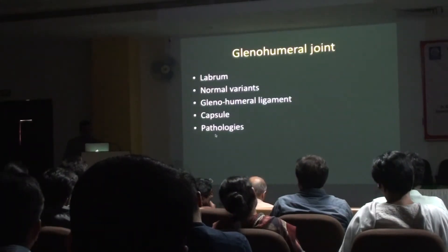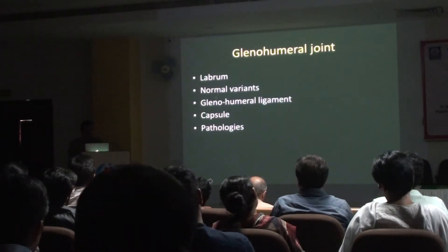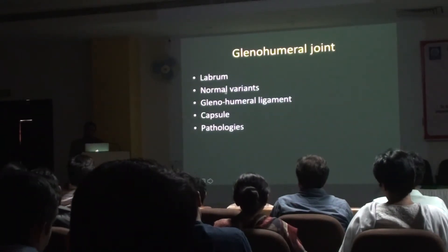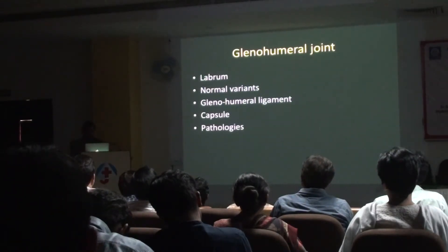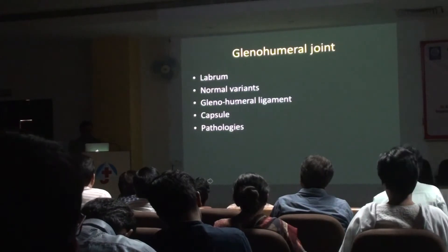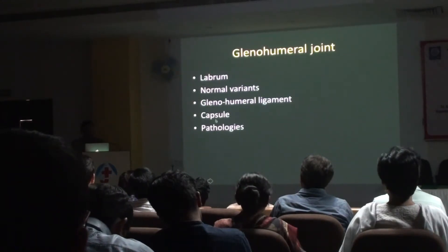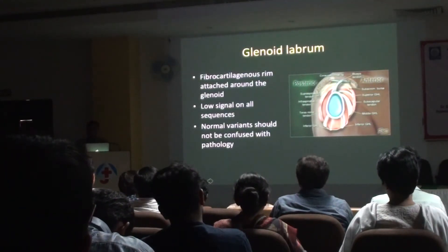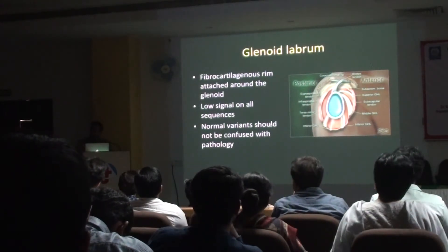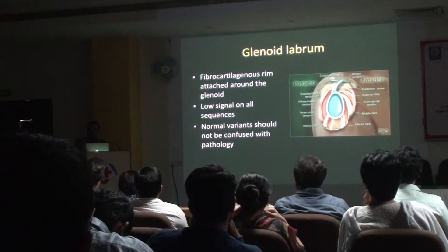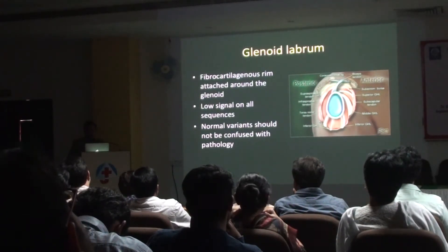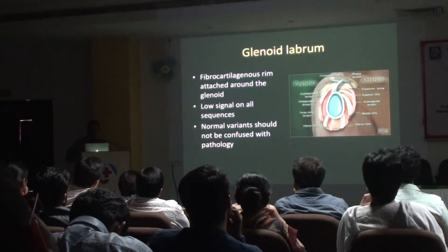After taking the arthrogram, I look at labral normal variants — because if you don't know normal variants, you will be calling pathology on every MR arthrogram. I also look at glenohumeral ligaments, capsular attachment type (type 1, 2, or 3), and pathologies. The labrum always appears jet black on most MR sequences. If it's not appearing black, or if you see white signal going through, you need to think about whether you're dealing with pathology.